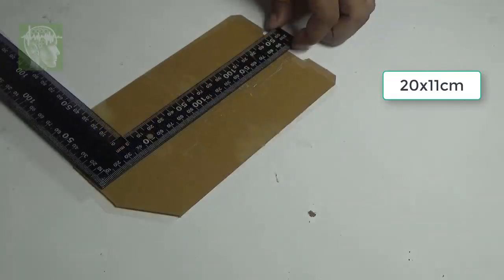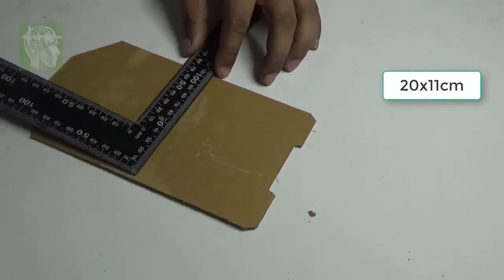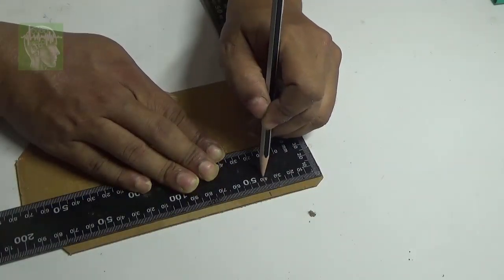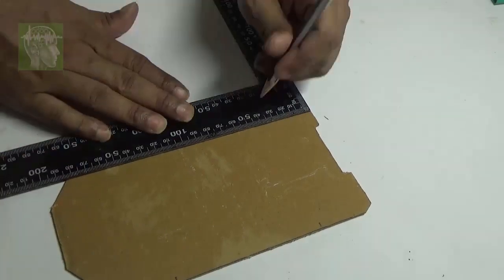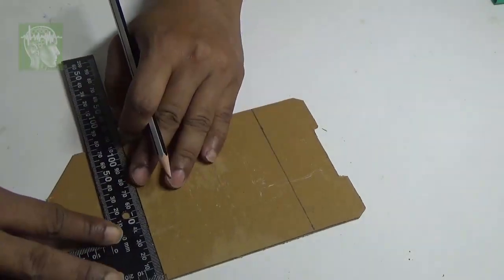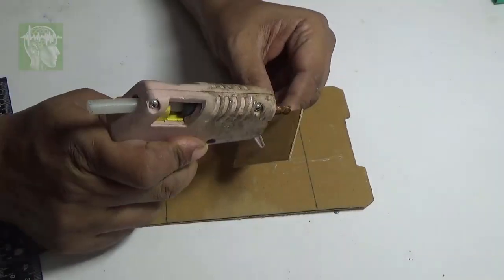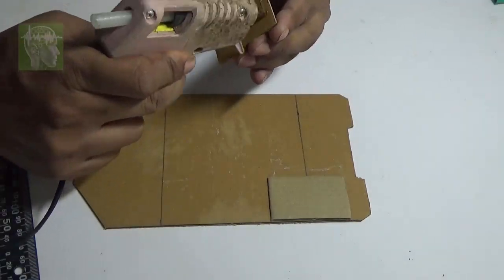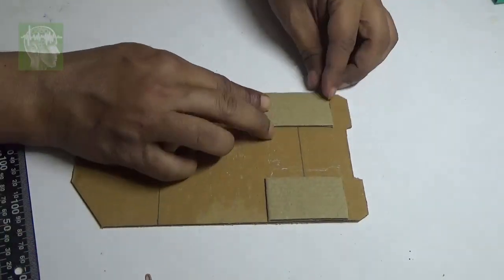For car chassis, take a cardboard approximately 20 centimeter by 11 centimeter. Leave four centimeter from back and draw two lines. The gap between the lines is 10 centimeter. Then glue two small pieces of cardboard as shown in the video.